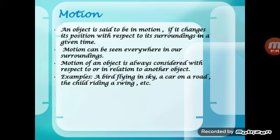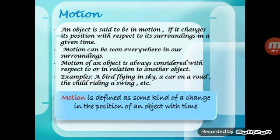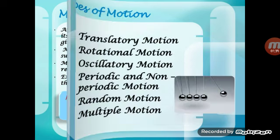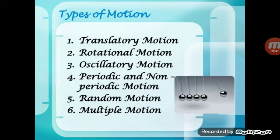Motion can be seen everywhere in our surroundings. Motion of an object is always considered with respect to another object. Examples include a bird flying in the sky, a car on the road, and a child riding a swing. Motion is defined as a change in the position of an object over time.